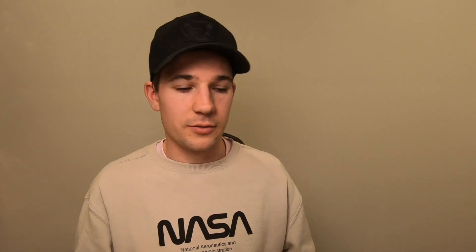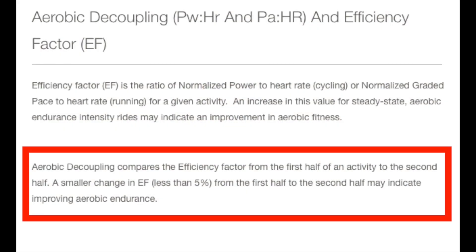I'm going to talk through aerobic decoupling first — this is straight from the TrainingPeaks website. Aerobic decoupling compares the efficiency factor from the first half of an activity to the second half. A smaller change in efficiency factor — less than five percent — from the first half to the second half may indicate improving aerobic endurance.